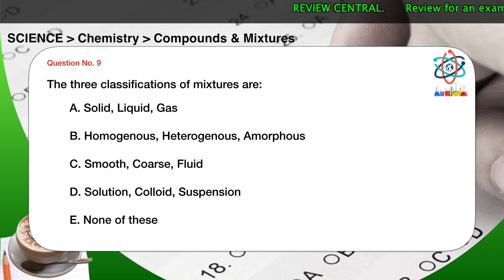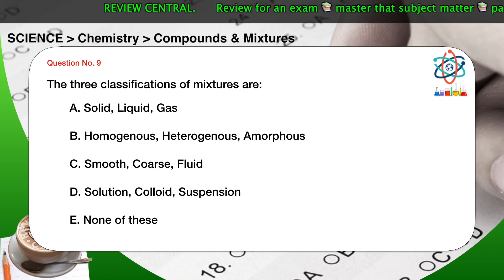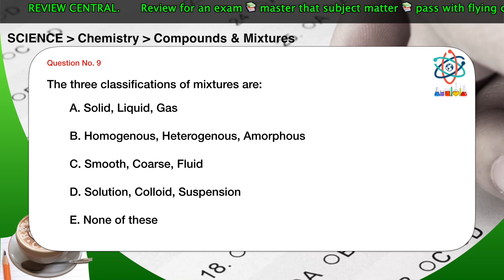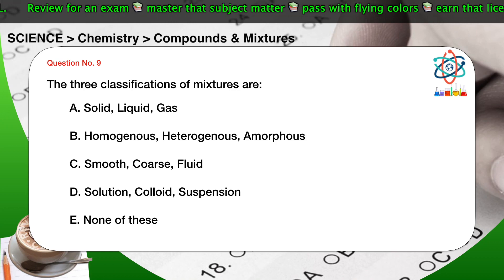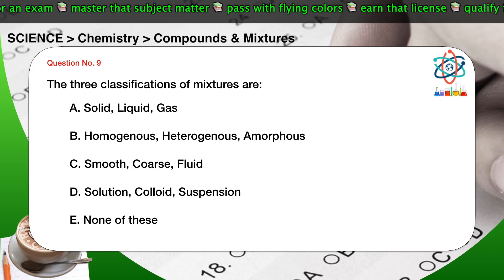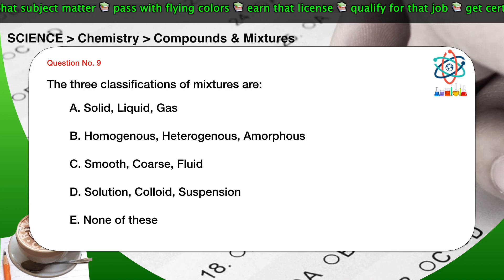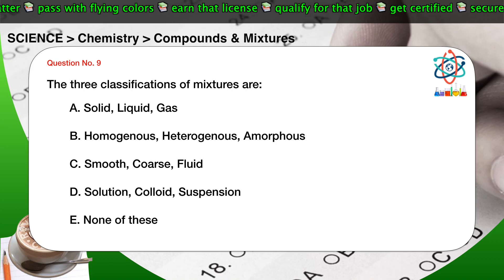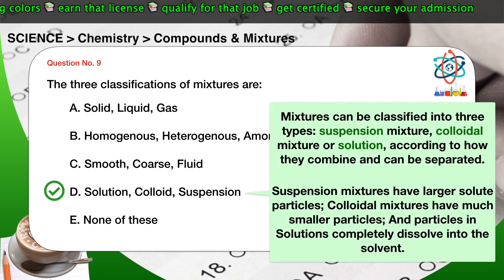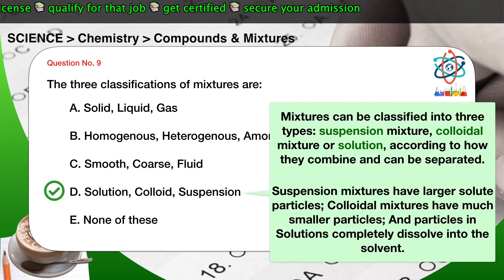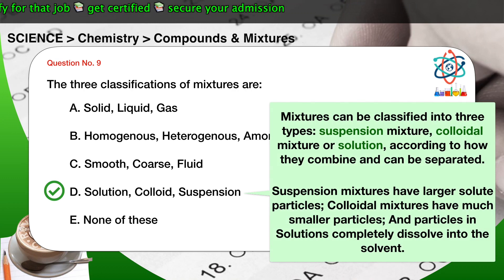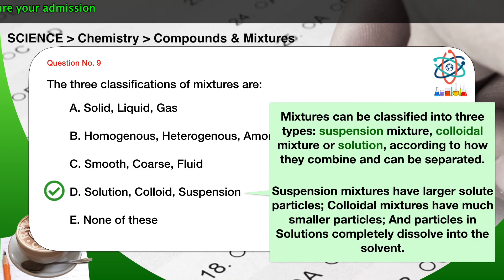Question number nine: the three classifications of mixtures are — A) Solid, liquid, gas. B) Homogeneous, heterogeneous, amorphous. C) Smooth, coarse, fluid. D) Solution, colloid, suspension. E) None of these. The correct answer is D: solution, colloid, suspension. Mixtures can be classified into three types according to how they combine and can be separated. Suspension mixtures have larger solute particles, colloidal mixtures have much smaller particles, and particles in solutions completely dissolve into the solvent.